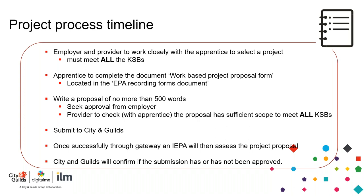The proposal should be no more than 500 words. Make sure you have approval from the employer that it's fit for purpose and can actually be implemented. It's the provider's responsibility to check the proposal with the apprentice to ensure it has sufficient scope to meet all the KSBs. The provider knows the assessment plan; the employer knows the job role — that's why it's important both come together. Once done, it would be submitted to City and Guilds along with the gateway documentation and functional skills evidence.